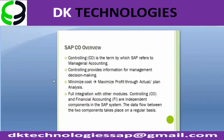SAP CO — controlling — is the term SAP uses for managerial accounting. Controlling provides information for management decision-making, focusing on minimizing costs and maximizing profit through actual versus plan analysis. Reports show actual costs versus planned costs so analysis can be done on where costs have been exceeded. Controlling and financial accounting are independent components in SAP but are closely linked, with data flowing between them on a real-time basis.